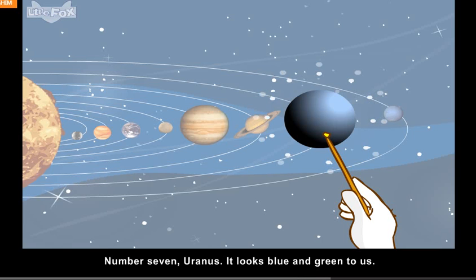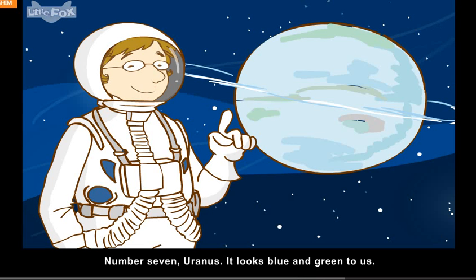Number seven, Uranus. It looks blue and green to us.